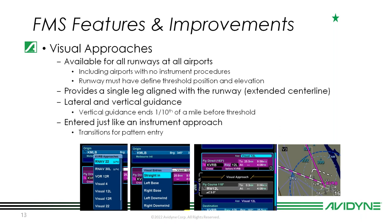That final leg will have lateral and vertical guidance. The depiction of the traffic pattern is a reference — it's not coupled. You can't enter a downwind and have the autopilot fly downwind, base, and final, but it will fly that final leg, ending a tenth of a mile before the runway threshold. You enter it just like any instrument approach — left base, right base, left downwind, right downwind, straight in: all visual entries are available as you build your flight plan.